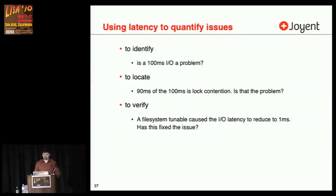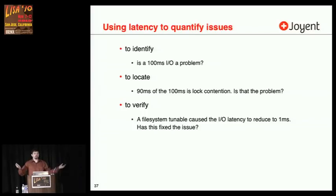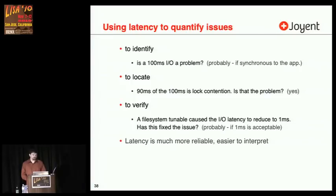Is 100 milliseconds IO a problem? Probably — it's pretty slow for a disk IO these days. To locate: if I identified that 90 milliseconds of the 100-millisecond IO was lock contention in the kernel, is that the cause of the problem? Yes — I've just identified 90% of it. If I change a file system tunable to make IO latency reduce to 1 millisecond, did I fix it? Probably. Latency is much easier to interpret: the application is waiting, it has a direct impact on performance — it is the primary metric. This is the metric I want to use if I'm going to visualize things.